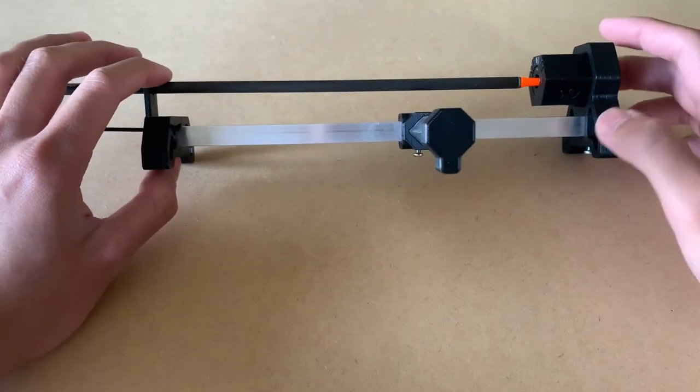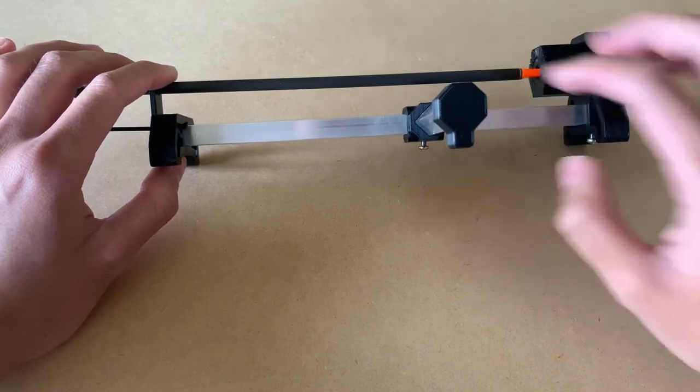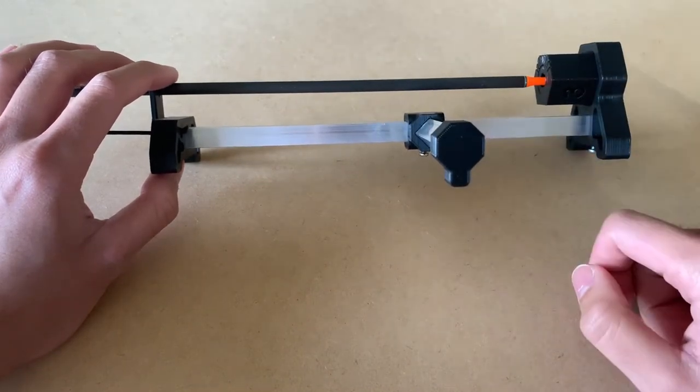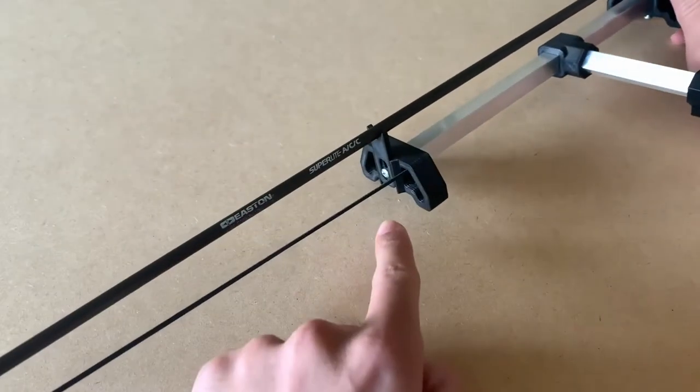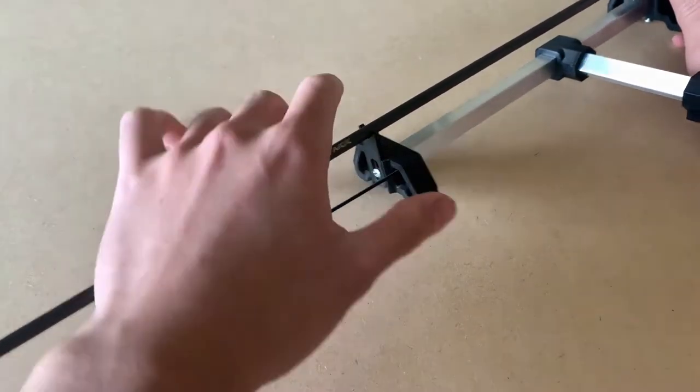From here we can tilt the jig to its side to see if the arrow shaft is parallel with the body. If it is not parallel with the body, you can undo this screw here and move the shaft up and down.